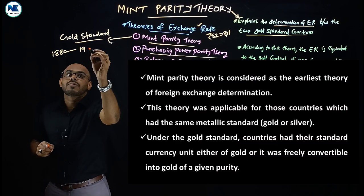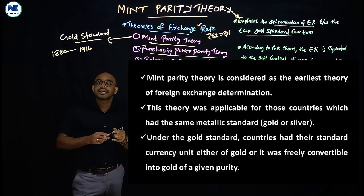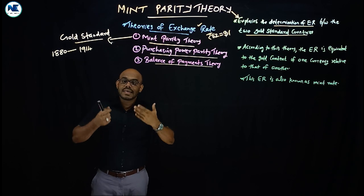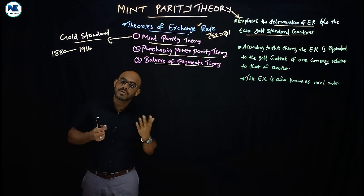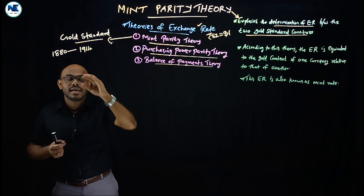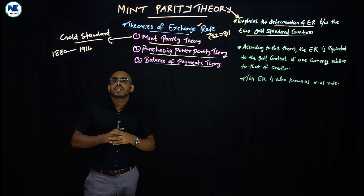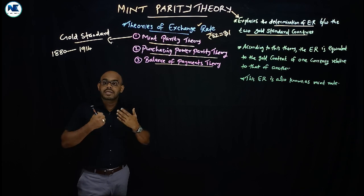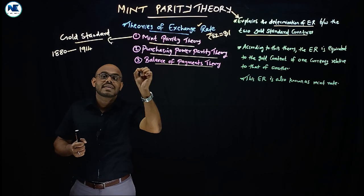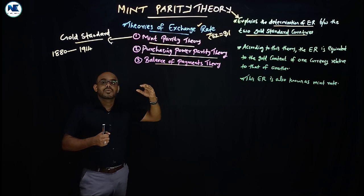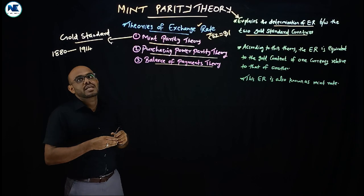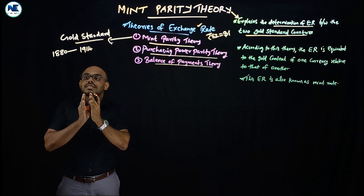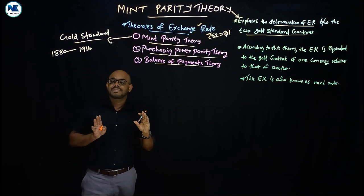The gold standard existed globally before World War One. After World War One it lost popularity, was reintroduced, but failed especially during the Great Depression. Historically, after World War Two, the Bretton Woods system introduced a fixed exchange rate system based on the gold exchange standard.